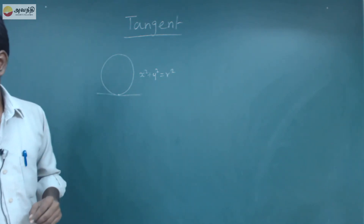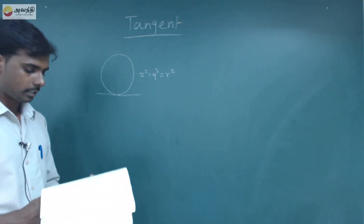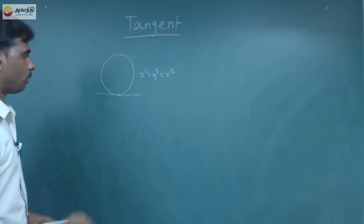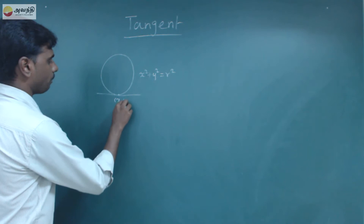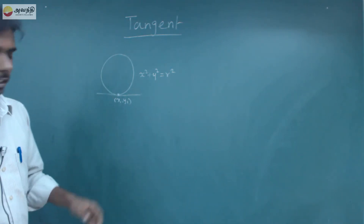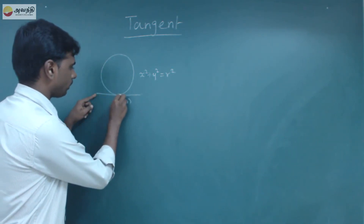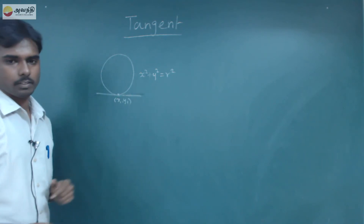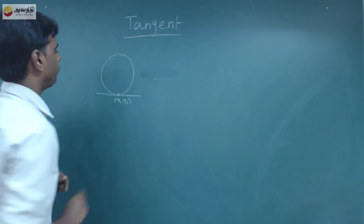Equation of the tangent to a circle at point (x1, y1). In this tangent line, we are going to talk about the tangent equation.